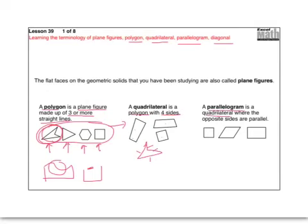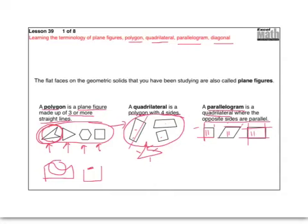A parallelogram is a quadrilateral where the opposite sides are parallel. This side and that side are parallel to each other, and this side and this side are parallel — so that makes it a parallelogram. This shape is a parallelogram. This shape right here is not a parallelogram — this side is parallel to that side, but this side is not parallel to that side; those would meet down here, so that's not a parallelogram.